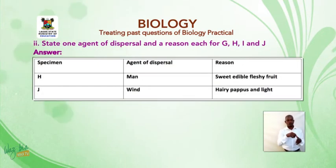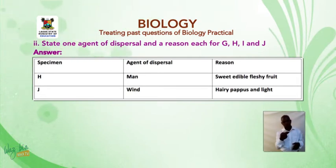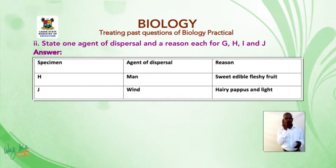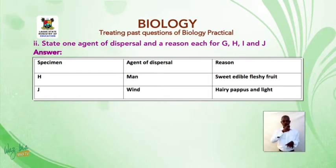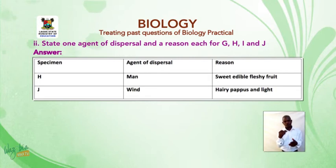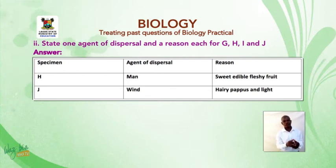State one agent of dispersal and a reason for H and J. For H, the agent of dispersal is man, because the fruit is sweet, edible, and fleshy. For J, the agent of dispersal is wind, because it is hairy, plumed, and very light.